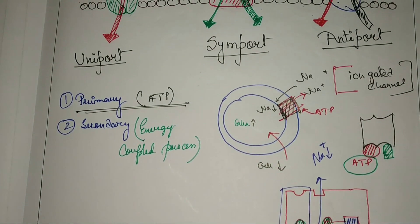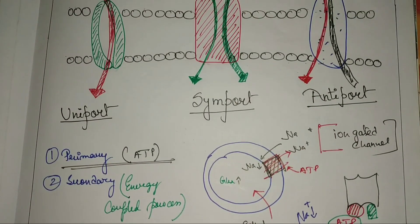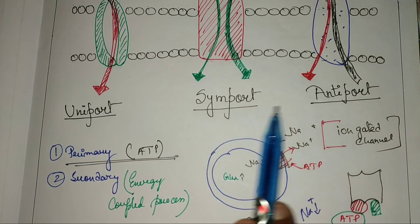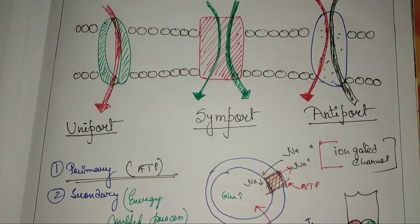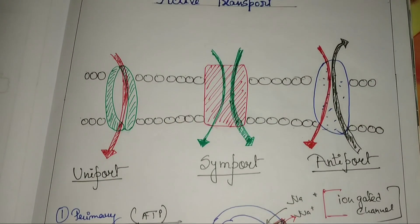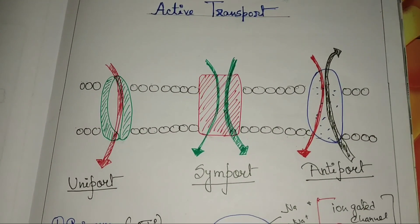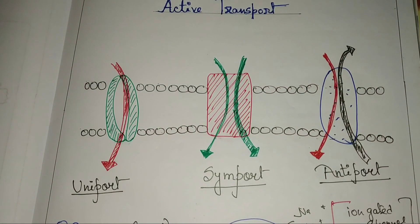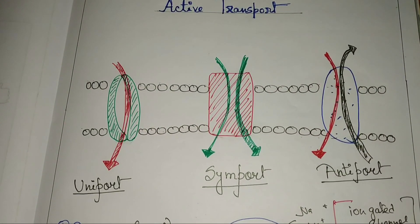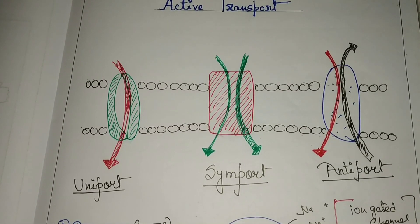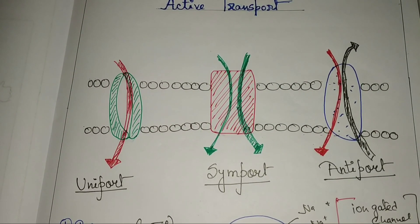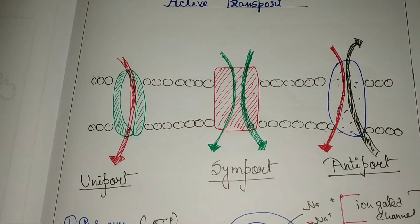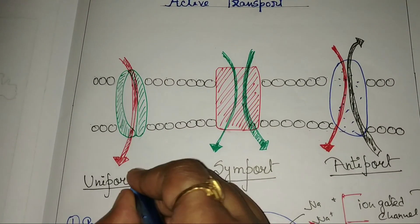Active transport is divided into three modes of transportation: uniport, symport, and antiport. In uniport, molecules are passed in one direction only — when one molecule is transported from higher to lower or lower to higher concentration in a single direction, it is known as uniport.